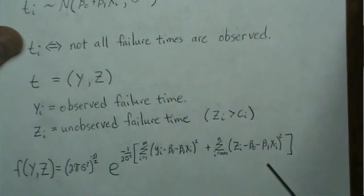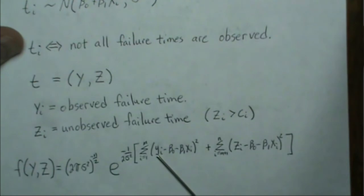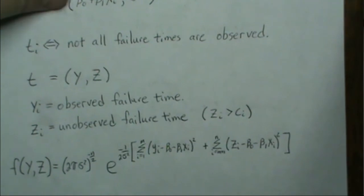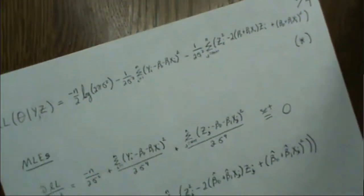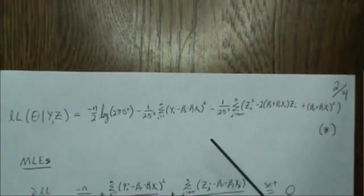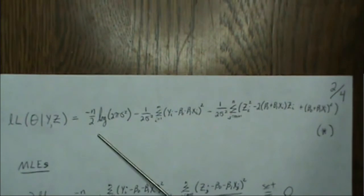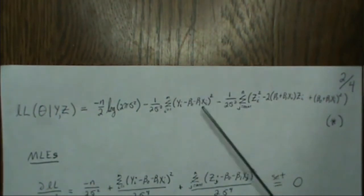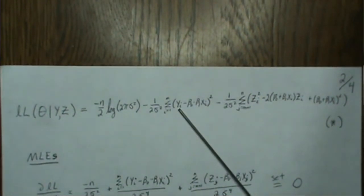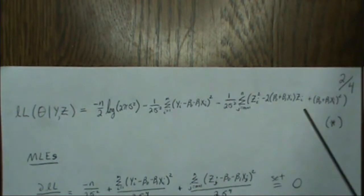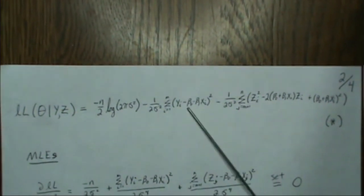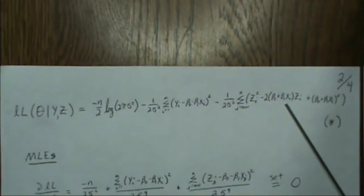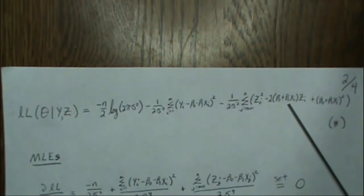Our ti is normally distributed, which corresponds to the observed and observable values. So our density is a normal distribution. There are the observed failure times and the unobserved failure times — all normal data. The log-likelihood is this expression: we take the log of everything, and for the unobserved zi terms I multiply out the squared term to get zi squared minus two times (beta_0 + beta_1 * xi) * zi.